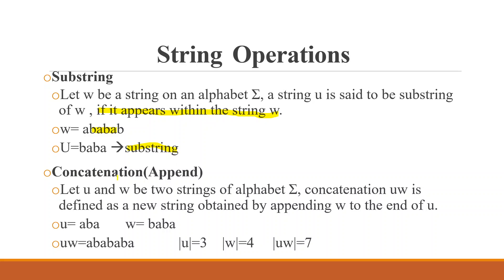The next topic is concatenation or appending. Concatenation joins two strings by appending one to the end of the other. Let u and w be two strings over alphabet sigma. The concatenation u·w is the new string obtained by appending w to the end of u. For example, if u equals aba and w equals abab, then u·w equals abaabab. The length of u·w equals the length of u plus the length of w.